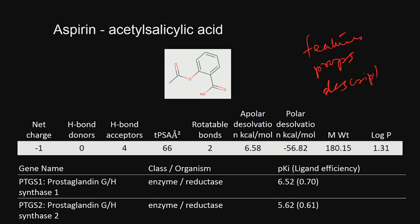Descriptor — just like if you take a human being, the properties could be height, weight, colour of the skin, colour of the hair, colour of the eyes — so many different properties. Similarly, for each chemical structure we can have a large number of properties, and we are going to talk about them later.